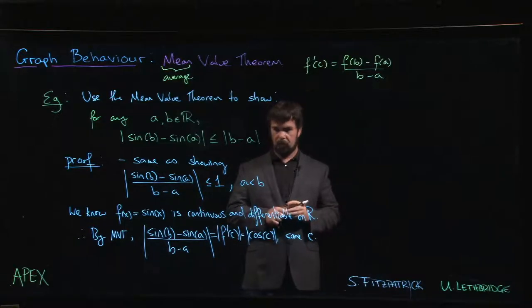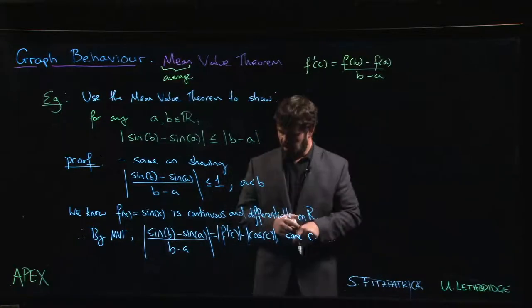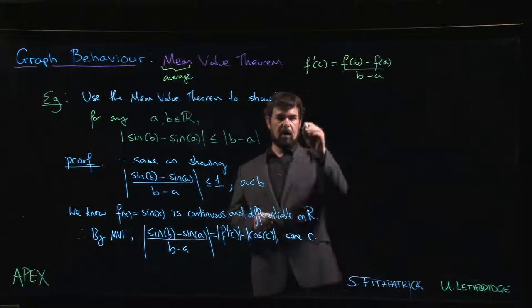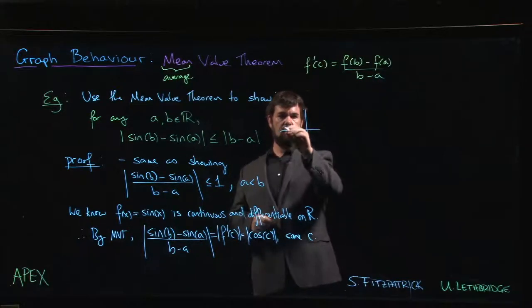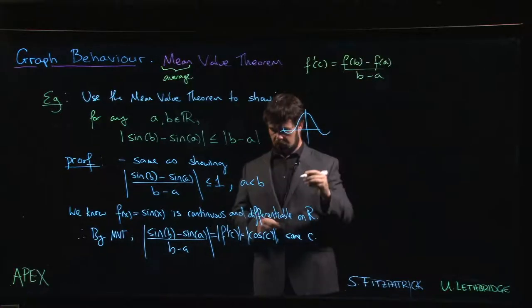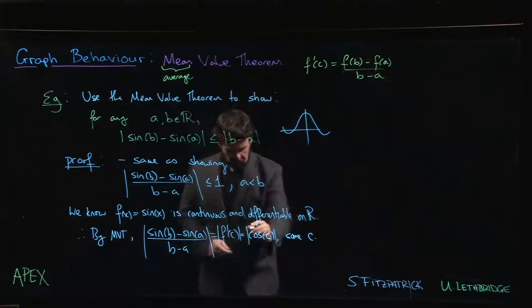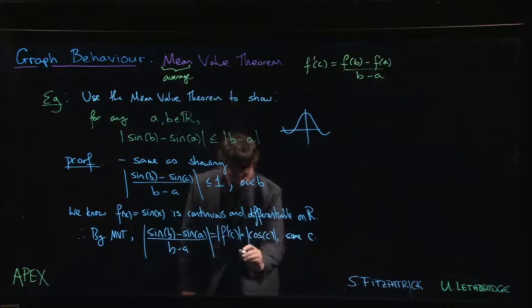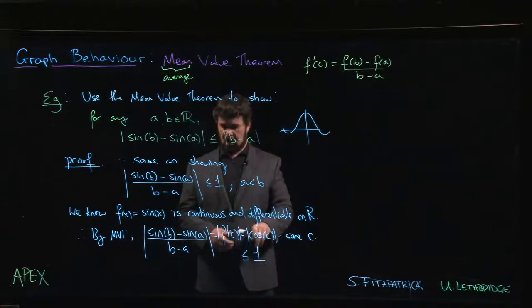what do I know about the absolute value of cosine? What do I know about the cosine function? I know that the cosine function is bounded—the graph oscillates between negative one and one. So in particular, I know that the absolute value of cos(c) has to be less than or equal to one.